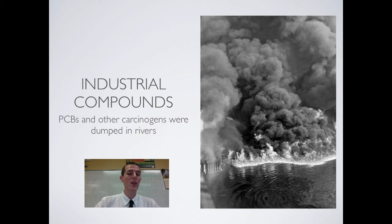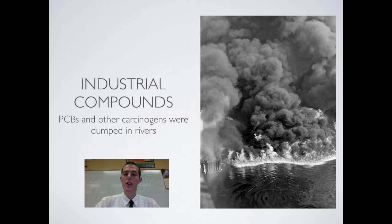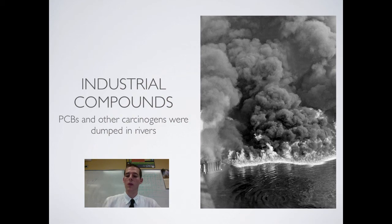When you've got water that can catch fire, you know you've got a problem. All of these contaminated rivers and the burning of the Cuyahoga River prompted fairly strict water quality legislation that has since led to a significant reduction in pollution in American waterways. Some industrial chemicals to be aware of: you need to know about PCBs, which are used in the manufacture of plastics and insulators. They are a significant carcinogen still being found in water. They are extremely persistent, so even though companies have stopped using them, they can still be found in water for quite a while.